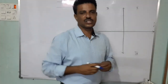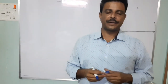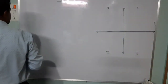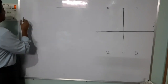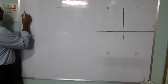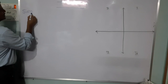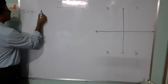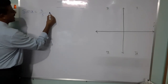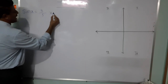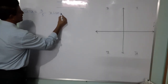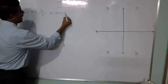Okay, next go to problem number 2. Problem number 2 is: sin x equals 3 divided by 5, and x lies in the second quadrant.